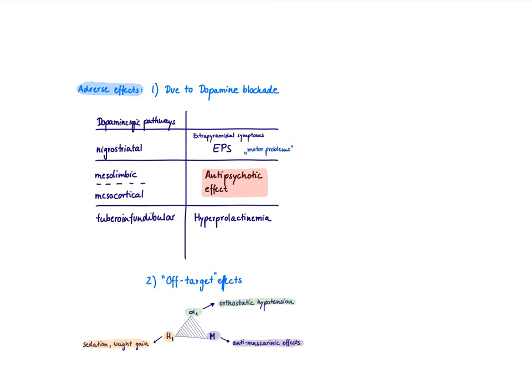And last we have the tuberoinfundibular pathway. And what we know there is dopamine blocks prolactin release. Therefore we can predict if you use a dopamine blocker, we're going to have more prolactin release, which is hyperprolactinemia, which is characterized by galactorrhea, so milk flow from the breast, gynecomastia or large breasts in men, and then also all kinds of menstrual problems in women like amenorrhea and also infertility in men. So all kinds of endocrine problems related to prolactin.